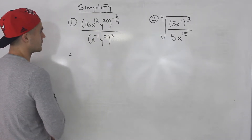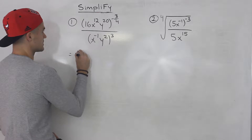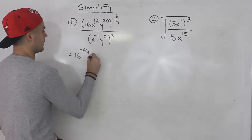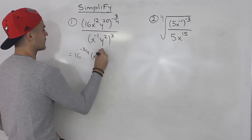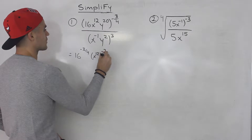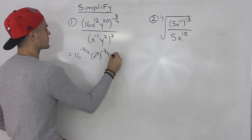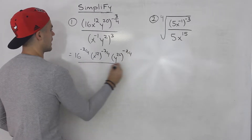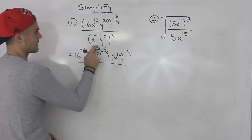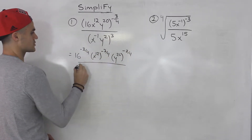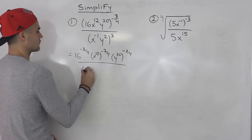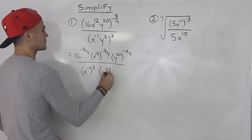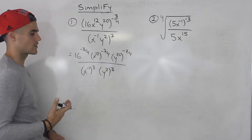So I'll have 16 to the power of negative 3 over 4, then x to the 12 to the power of negative 3 over 4, then y to the 20 to the power of negative 3 over 4. And then I'm going to take this 3 and distribute it, so I get x to the negative 1 to the power of 3, and then y to the power of 2 to the power of 3.